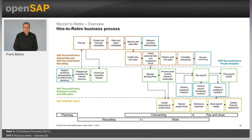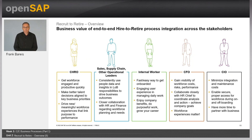With that, the hire-to-retire process is described. Let me come to the stakeholders, the involved parties of the process, and what kind of benefits and business value they really get out of an integrated hire-to-retire process. Let me start with the head of HR, the chief HR officer.